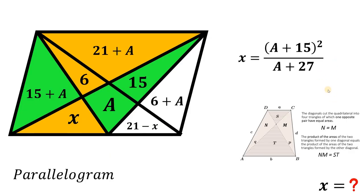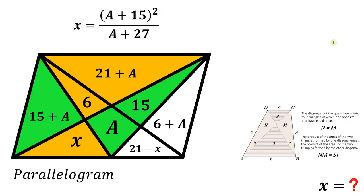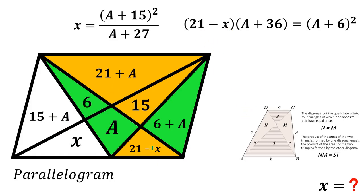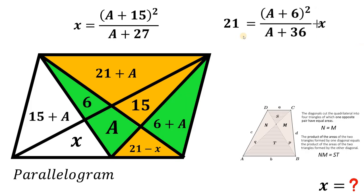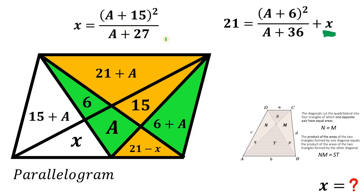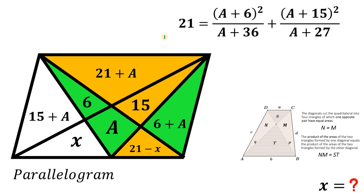Setting that result aside, we use another trapezoid with the same concept: (21 minus x) times (a + 36) equals (a + 6) squared. Dividing both sides by (a + 36) gives 21 minus x equals (a + 6) squared over (a + 36). Adding x to both sides and substituting x equals (a + 15) squared over (a + 27), we now have a single equation in terms of a only.